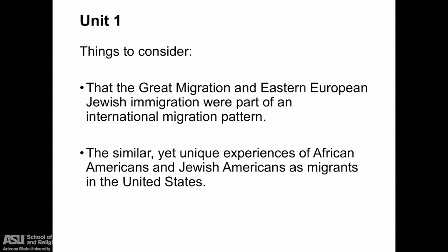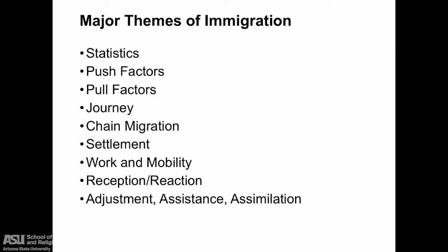Let's consider two things we mentioned last week: that the Great Migration and East European Jewish immigration were part of an international migration pattern. Let's also consider the similar yet unique experiences of African Americans and Jewish Americans as migrants in the United States. Remember our themes of immigration — the major themes which we used to examine Jewish immigration — but now we will take a look at the migration of African Americans from the South to northern cities. These major themes form the structure of this presentation as well, so the comparison will be much easier to make between the two migrations.